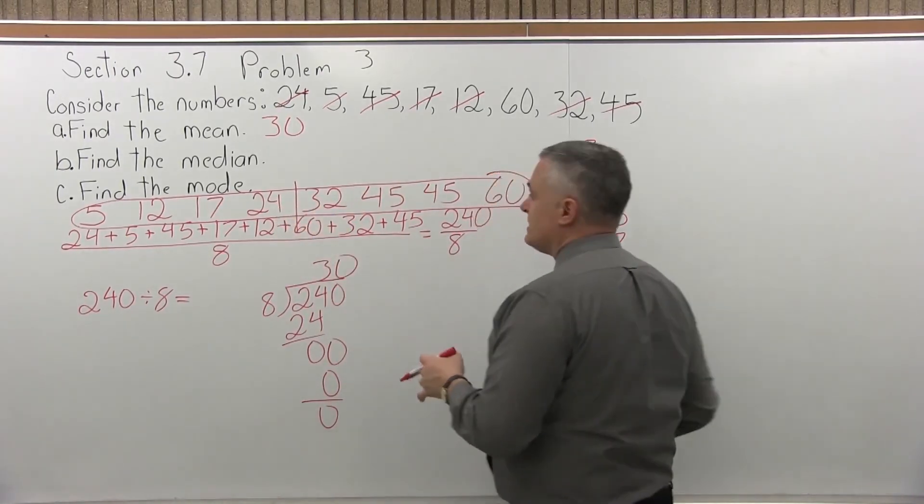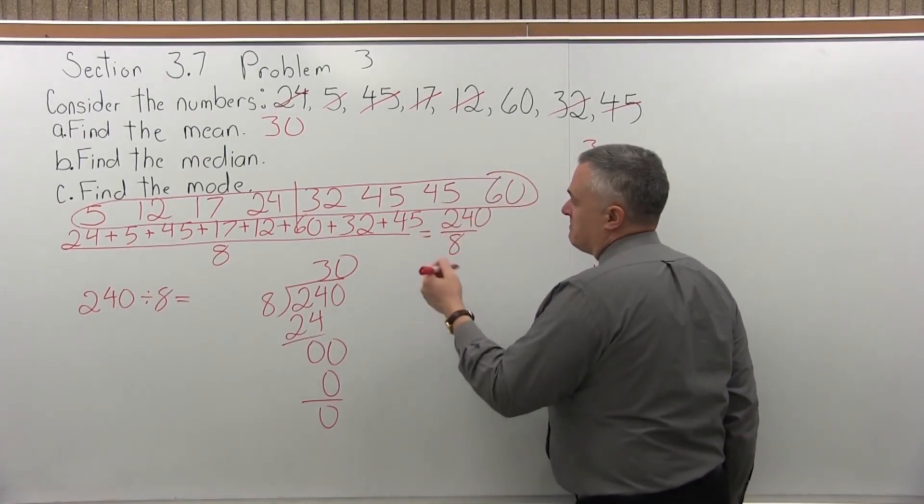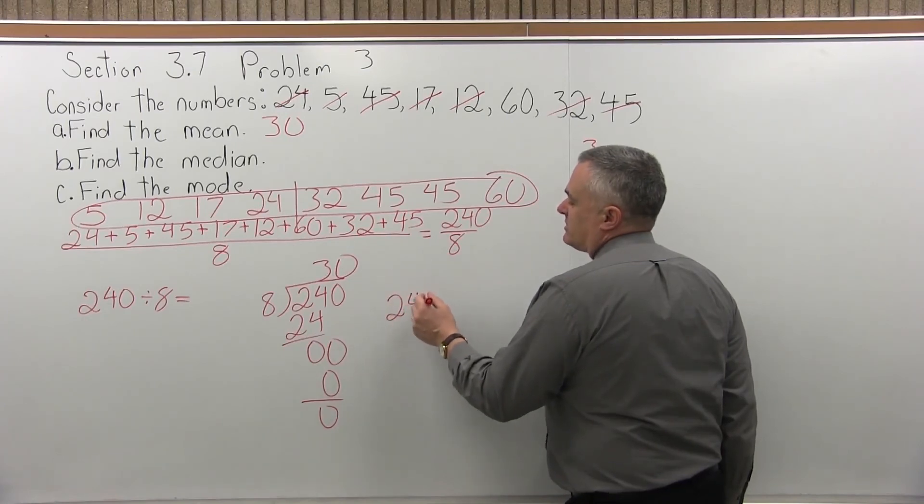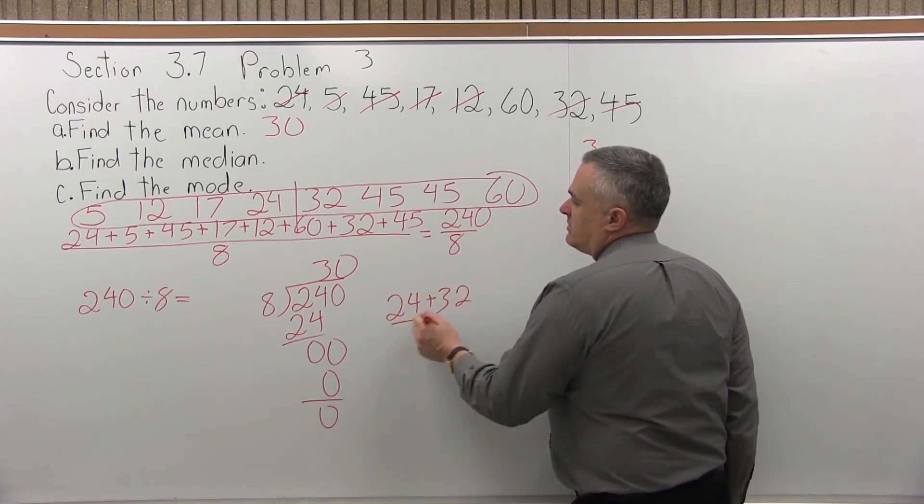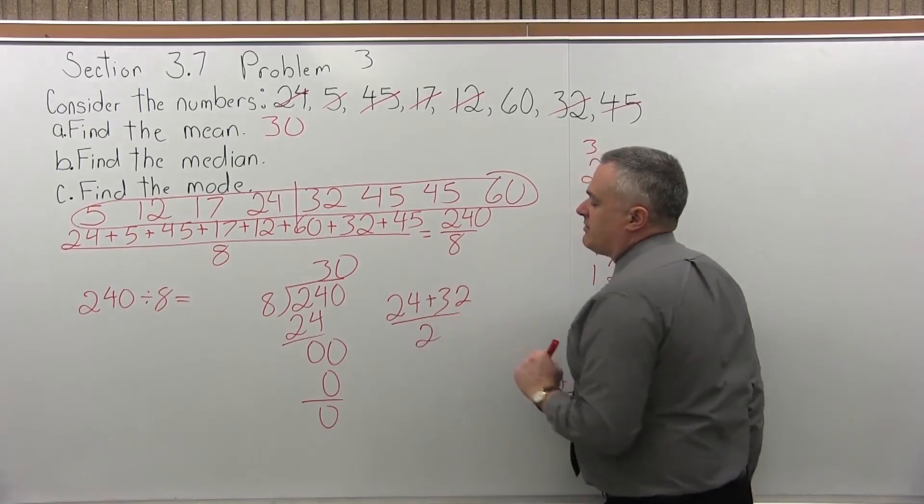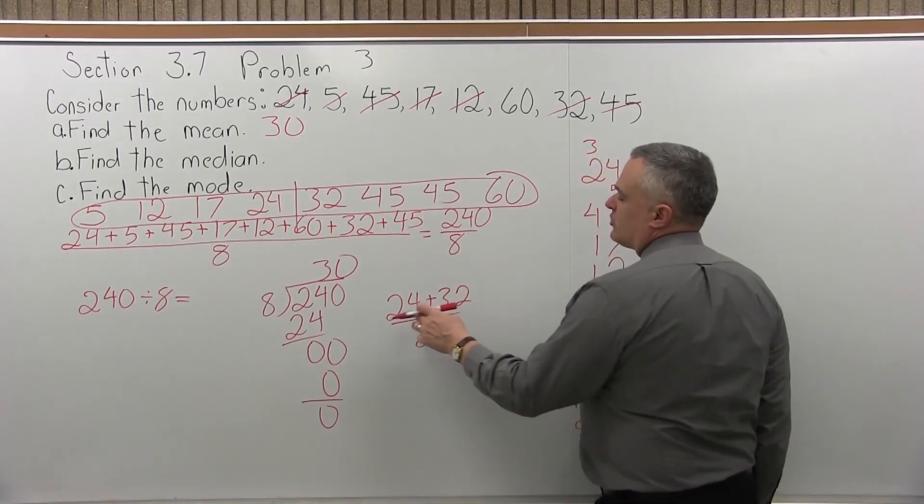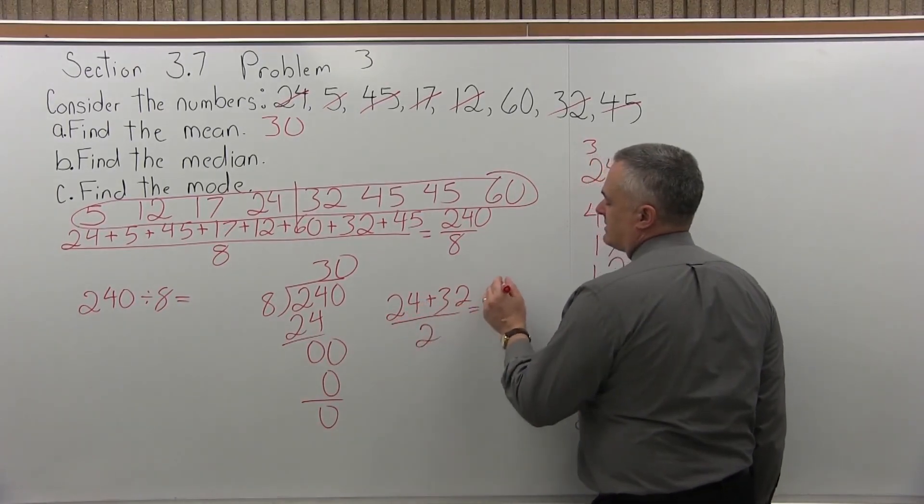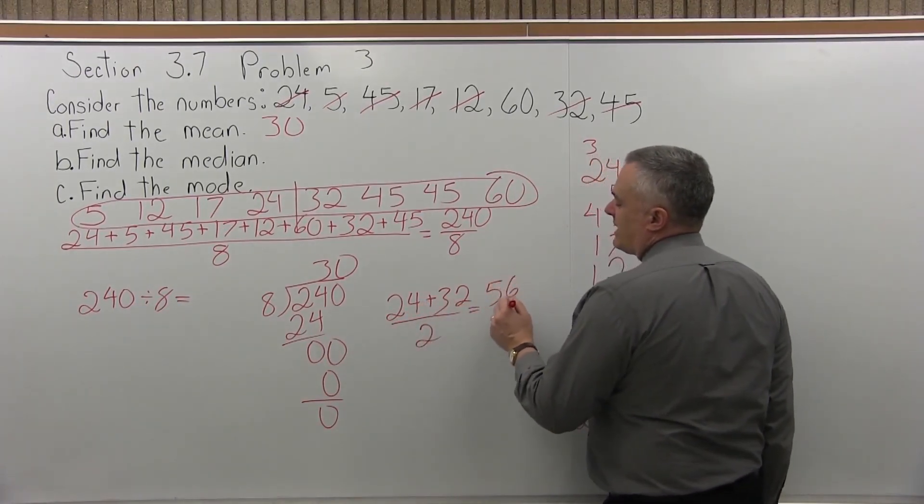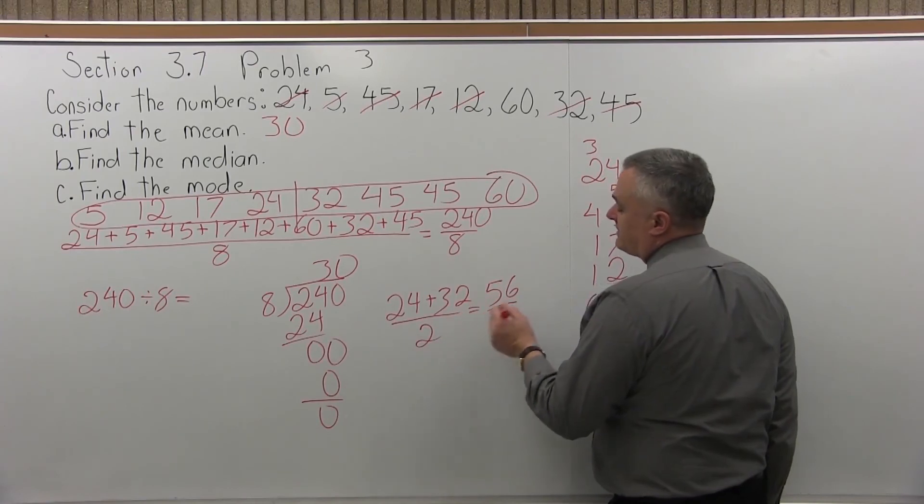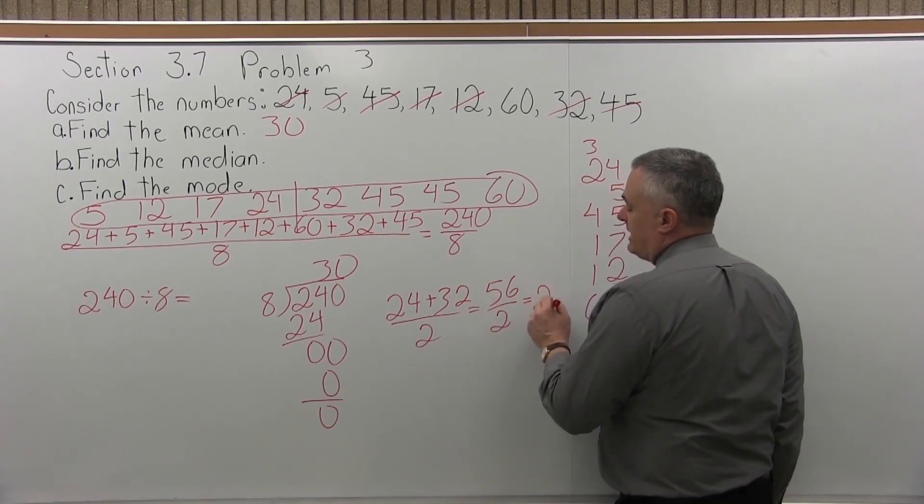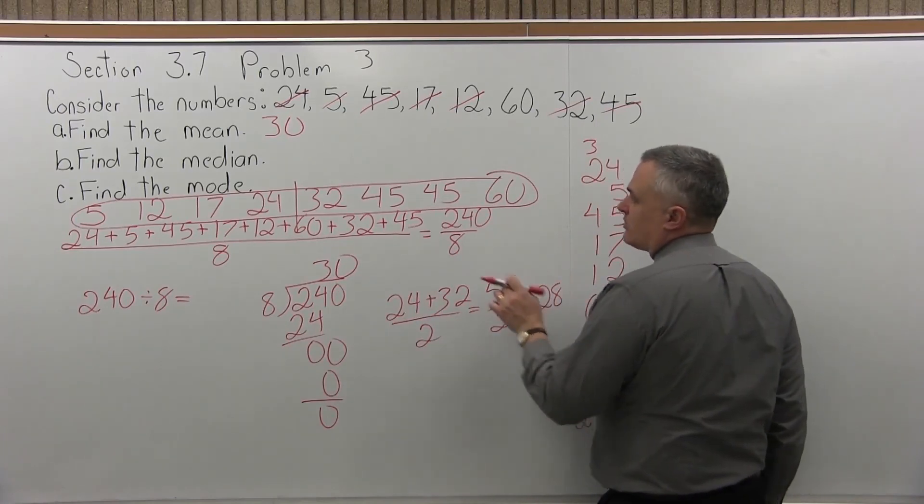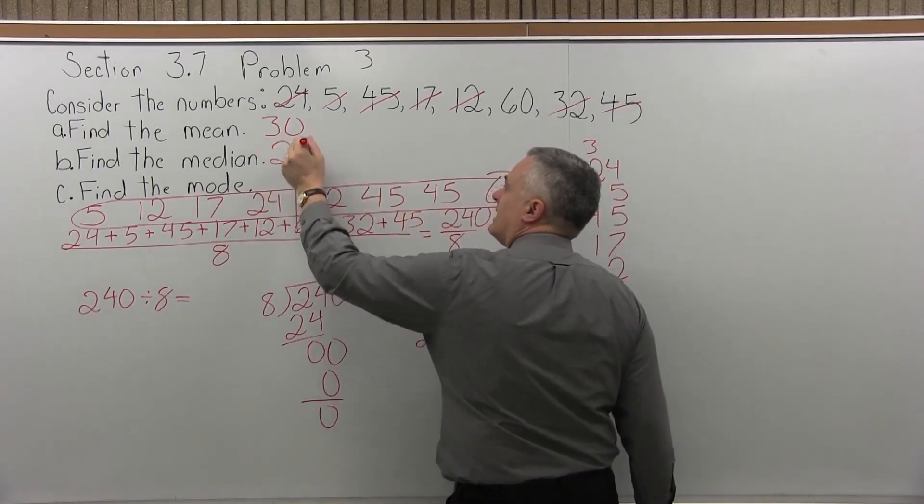It should be 28. 28 is four larger than the 24, it's four smaller than the 32. You might be able to see it without doing the computation. If you have to do the computation, that's okay too. Take the two numbers, add them together, divide by two. So 24 plus 32, the 20 and the 30 is 50, the four and the six add 56. 56 divided by two, well, half of 56 is 28. So that's the median, 28.